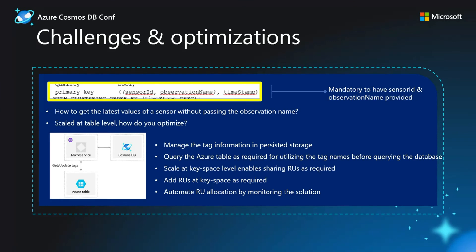The other challenge we noticed was that with each tenant, a set of RUs were allocated. Whether there were queries fired against a tenant or not, there would always be at least 10% of RUs allocated and getting charged — unused capacity. To handle this, one of the implementations we went with was to move the RU allocation from the tenant level to the key space itself, meaning you allocate a certain set of RUs at the key space level, and all tenants under that key space share the same set of RUs. This ensures that if one tenant is not fully utilizing its capacity, another tenant can consume it — making it a well-optimized solution.